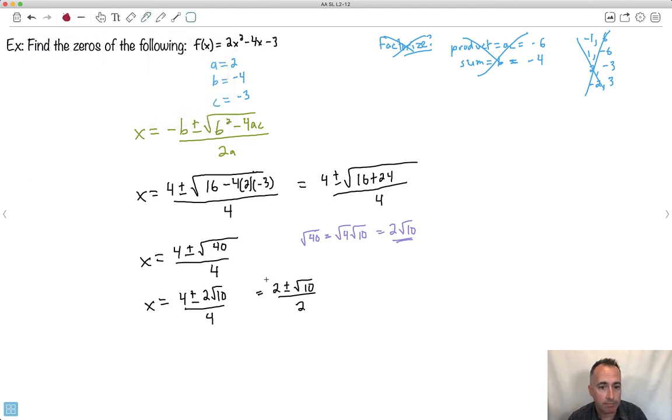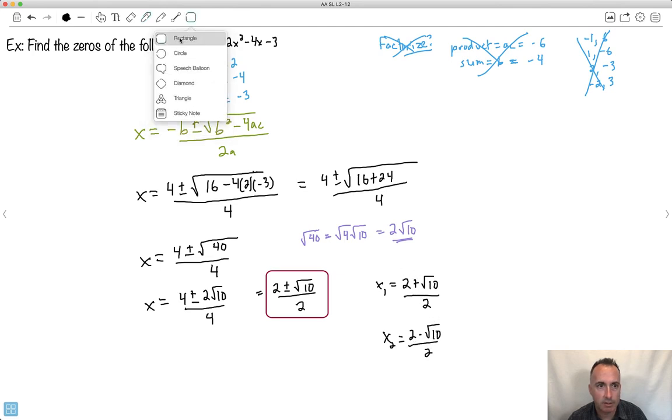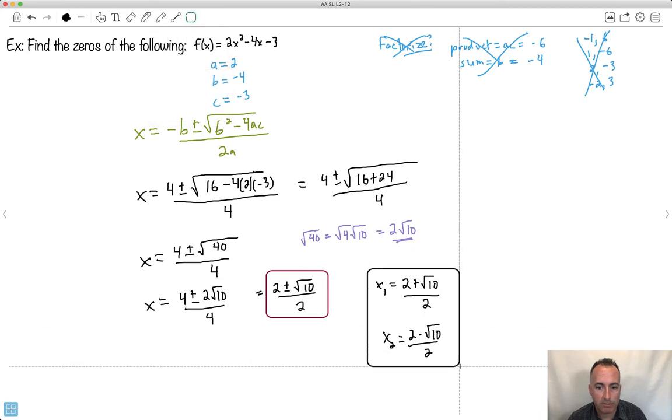Those would be the two different places. You could split them up. Some people like to write x1 equals 2 plus root 10 over 2, and x2 equals 2 minus root 10 over 2. These are the exact values.